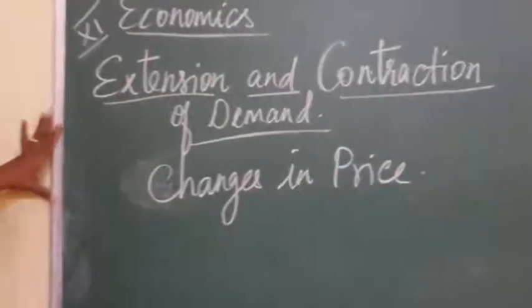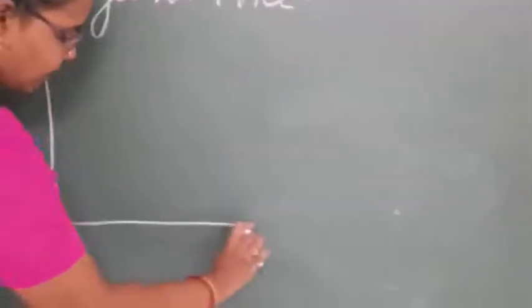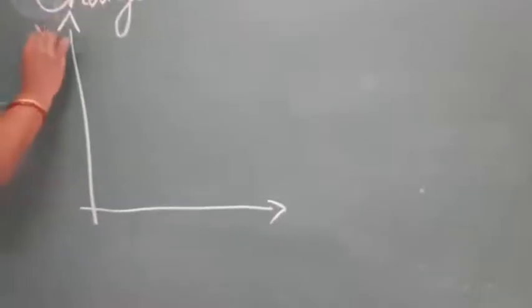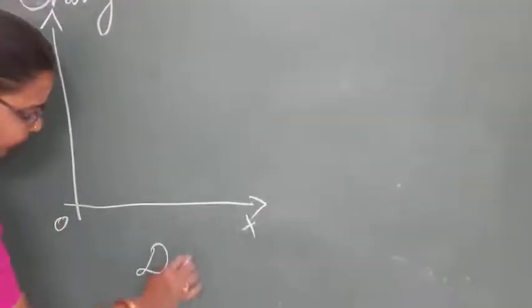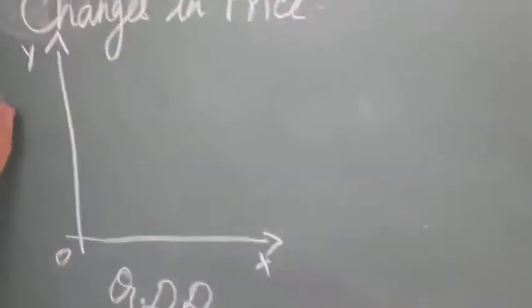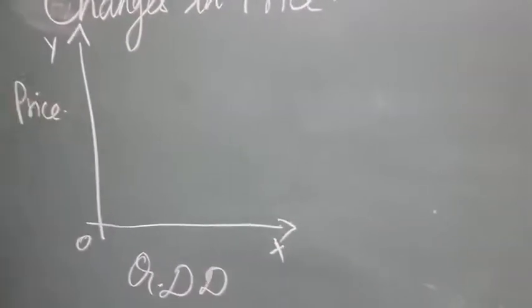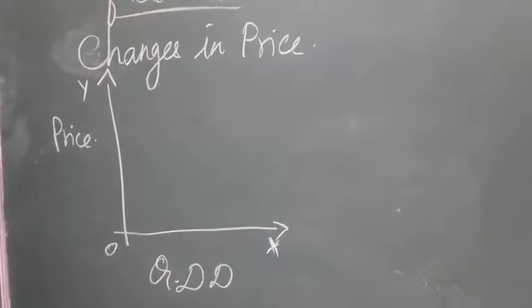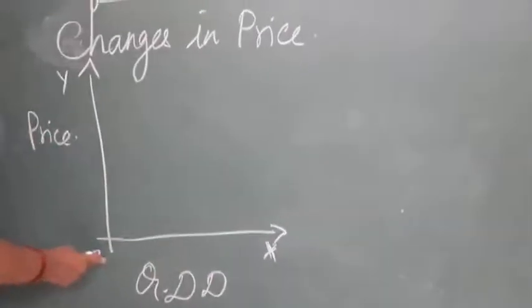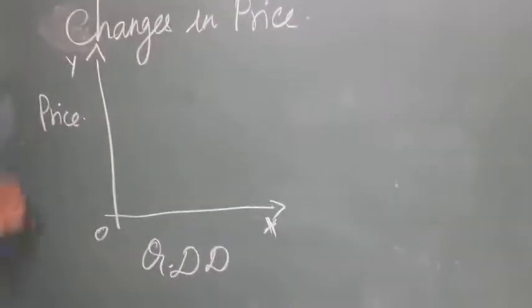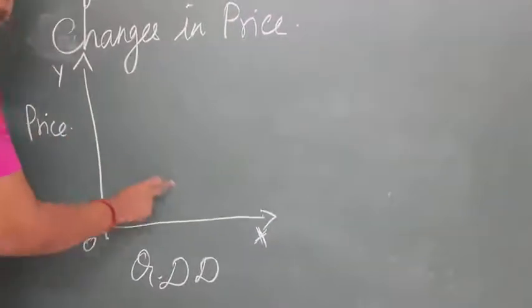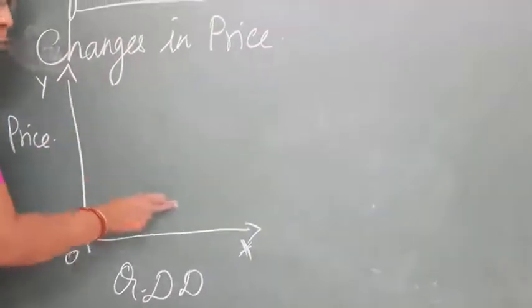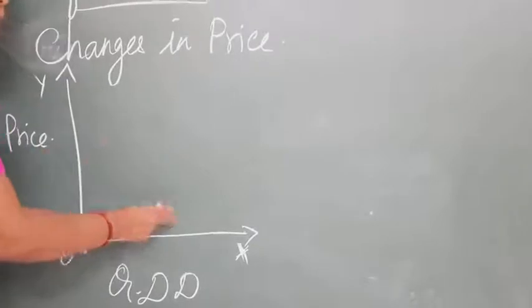Let us see the diagram. On the x-axis, we have marked the quantity demanded. On the y-axis, I have marked price. Usually, the demand curve will be from left to right, downward sloping.